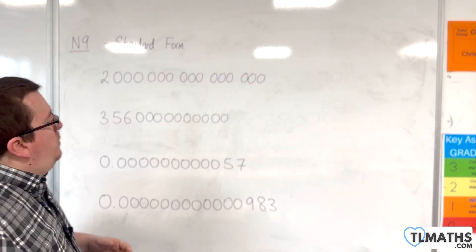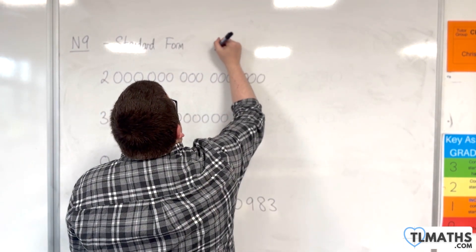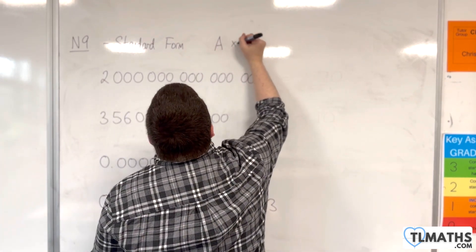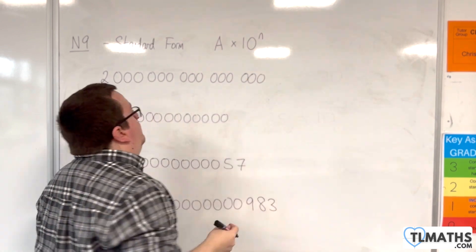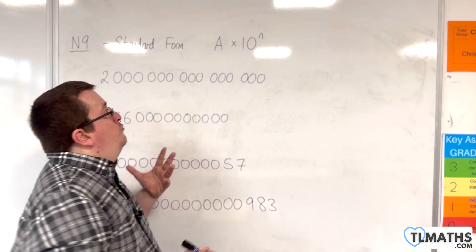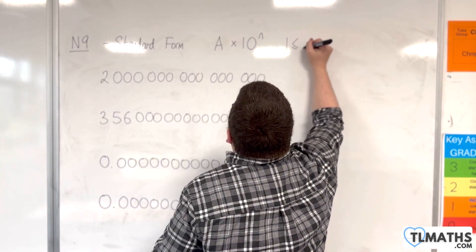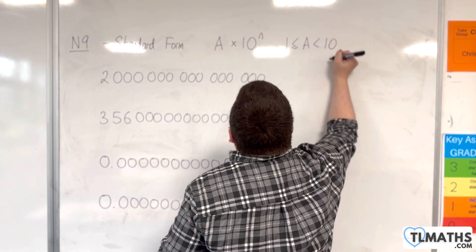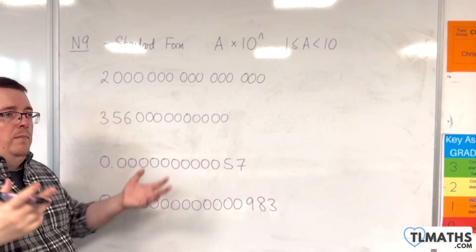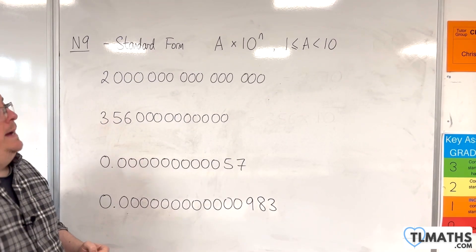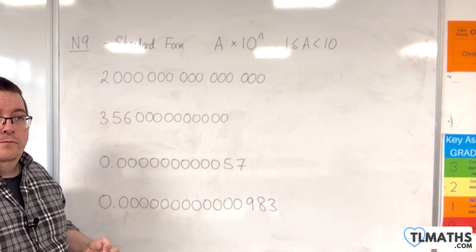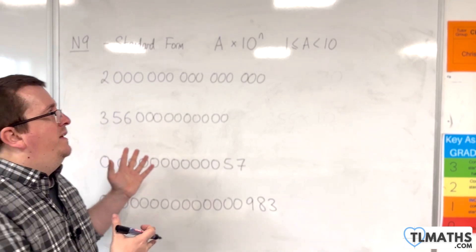The form that we work with is we write them as something, A, times 10 to the something, N. The A we're going to restrict to being greater than or equal to 1 but less than 10. So it could be 1.2 or it could be 3.874, but it can't be 0.8. It can't be 11.2. It has to be greater than or equal to 1 but less than 10.